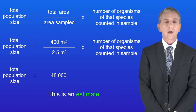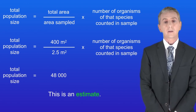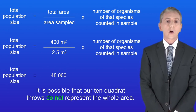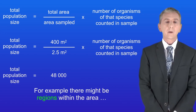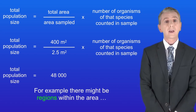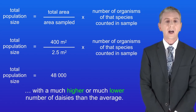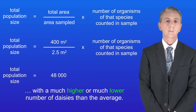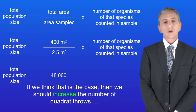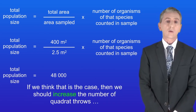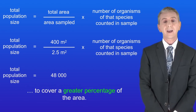This is an estimate. It's possible that our 10 quadrat throws do not represent the whole area. There might be regions with a much higher or much lower number of daisies than the average. If we think that's the case, we should increase the number of quadrat throws to cover a greater percentage of the area.